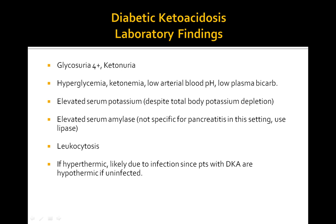Leukocytosis is common, and patients who are hyperthermic should be suspected of having an infection, since DKA patients are usually hypothermic. Elevation in BUN and creatinine is a sign of dehydration. Patients may also have pseudohyponatremia; corrected sodium equals the measured sodium plus 2.4 times the quantity of measured glucose minus 100. The increase in amylase is present even if the patient does not have pancreatitis.